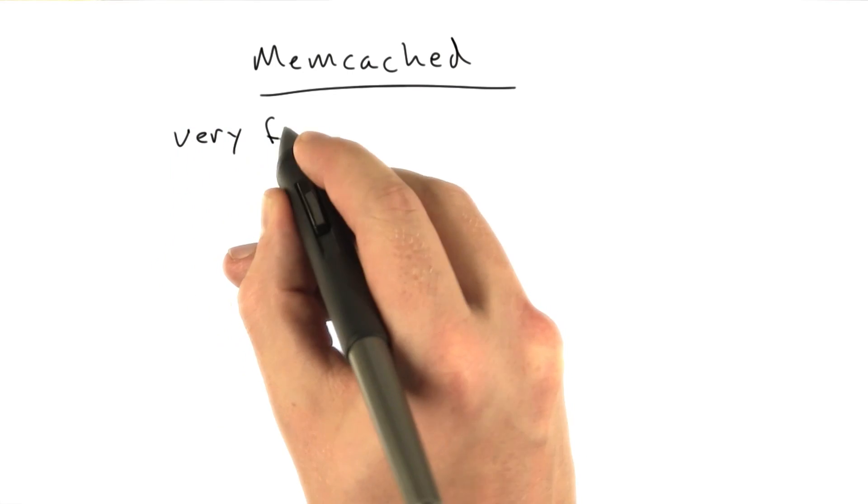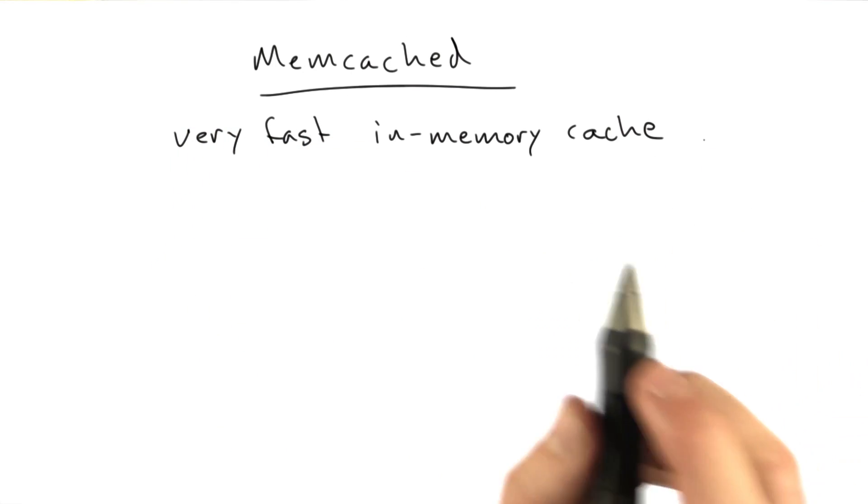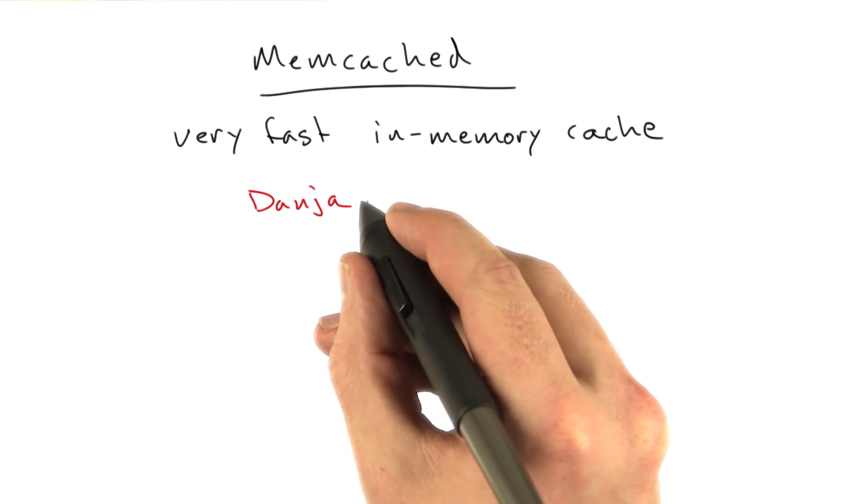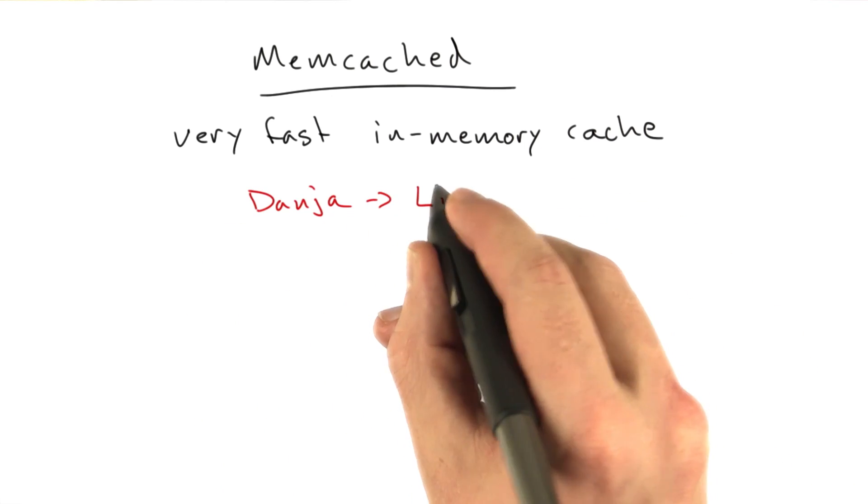Memcached is a very fast in-memory cache. It was built by a company called Danga to power a website called LiveJournal.